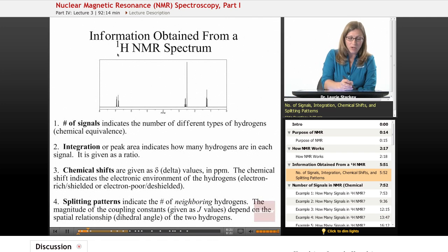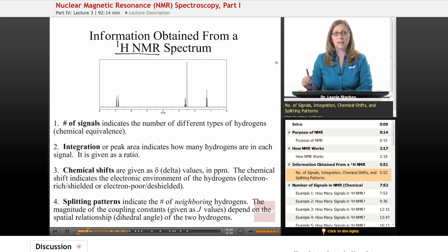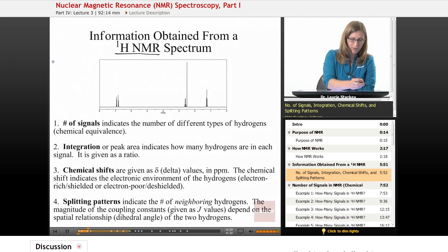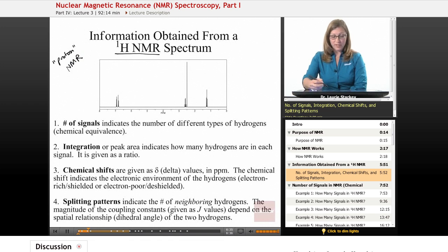Now we're going to be starting with proton NMR, just looking at the normal isotope of hydrogen. We describe that as proton NMR, and this is an example of what a proton NMR looks like. So the first thing is the number of signals that tells us how many unique types of hydrogens there are in the structure.